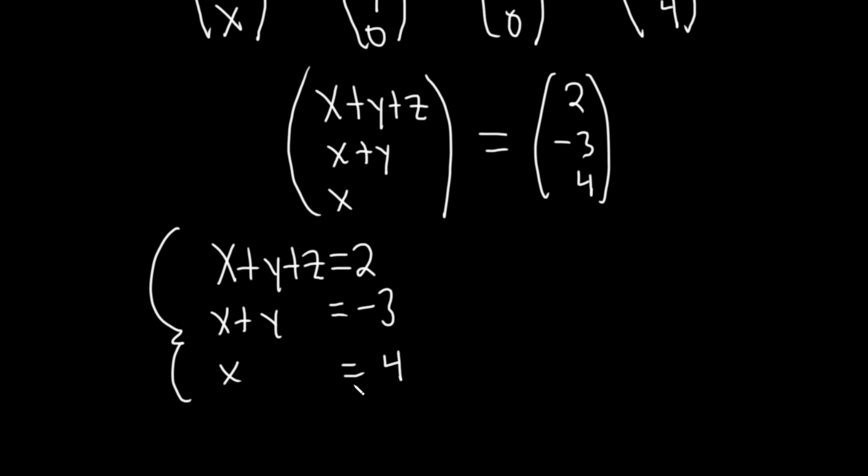So you start with x equals 4, which we already have. And then you plug it in here. So you get 4 plus y equals negative 3, because x is 4.